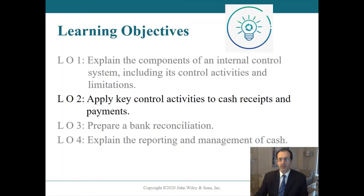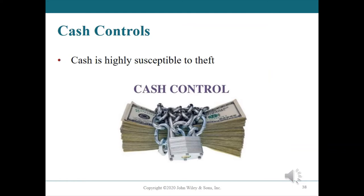Learning objective number two: apply key control activities to cash receipts and cash payments. Cash controls. Cash is something everyone desires, which makes it highly susceptible to theft. Because companies can have large volumes of cash transactions, errors may easily occur in recording them. To safeguard cash, protect it from theft, and ensure the accuracy of accounting records, effective control activities are essential.